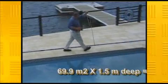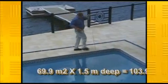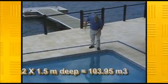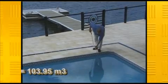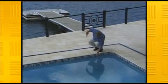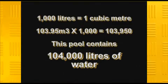To calculate the total capacity of your pool, simply multiply this average depth by the total surface area. This pool has a capacity of 103.95 cubic metres. There are 1,000 litres in one cubic metre, therefore your pool contains 103,950 litres — close enough to 104,000 litres.